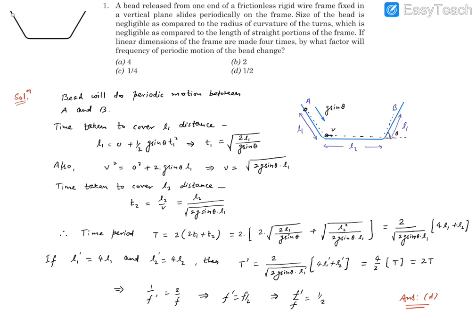So we can say this length is going to be l₁. So this is l₁, this is l₁, this is l₂. Let's say this angle of inclination is θ, so if you measure this angle, this is also going to be θ.